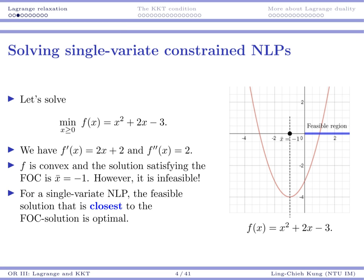So let's take a look at one example. Let's start with our favorite single-variate constraint optimization. Suppose we want to solve this problem. We want to minimize x squared plus 2x minus 3 over the region where x is non-negative. So graphically, we can see it's like this. So we have a curve like this. And then we have a feasible region over the region where x is non-negative.